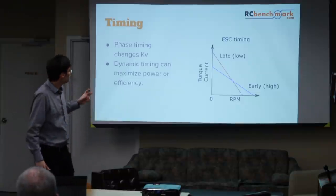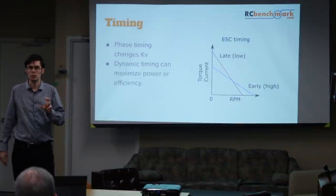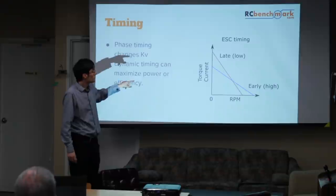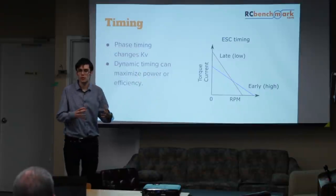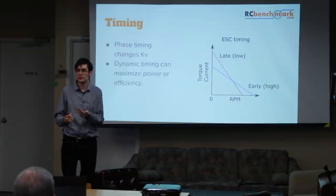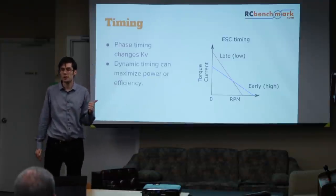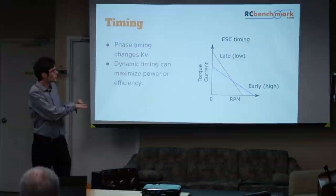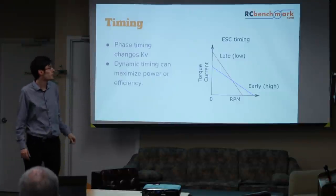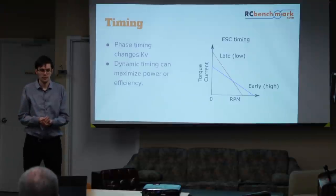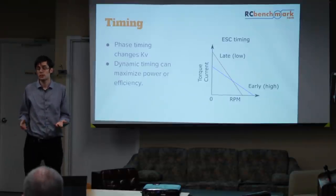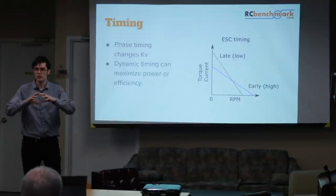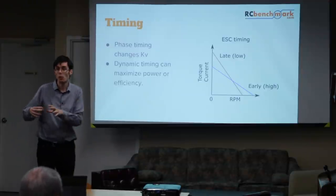By changing timing, you're actually changing the KV of the motor — the torque response of your device. This is useful because by adjusting timing you can always extract maximum power from your motor, which is what racers want. For efficient flight — photography or long flight time — you can use dynamic timing to always stay in the most efficient operating region on the efficiency graph.